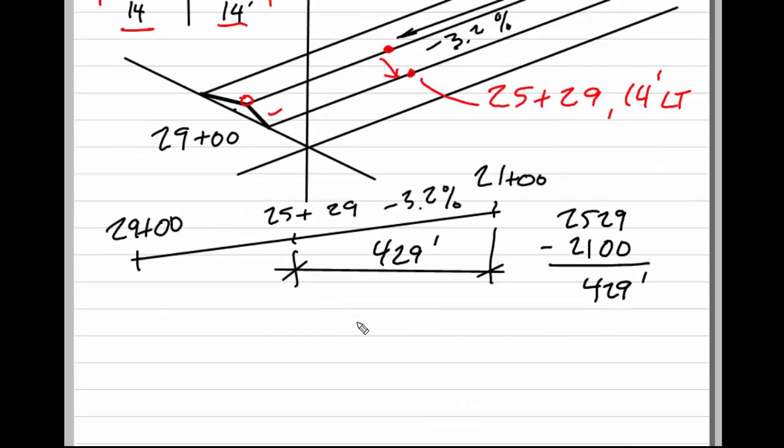We know that slope is vertical over horizontal. So in this case I know what the slope is. I know what the horizontal is. I am trying to find the vertical. So vertical, if I solve, is simply going to be horizontal times slope.